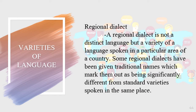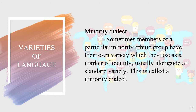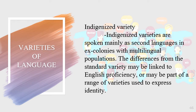The third is regional dialect — a variety of a language spoken in a particular area of a country. Some regional dialects have traditional names marking them as significantly different from standard varieties. The fourth is minority dialect — used by members of a particular minority ethnic group as a marker of identity, usually alongside a standard variety. And lastly, indigenized varieties — spoken mainly as second languages in ex-colonies with multilingual populations, with differences linked to English proficiency or to expressing identities.